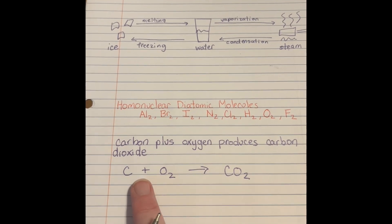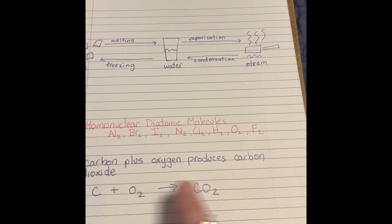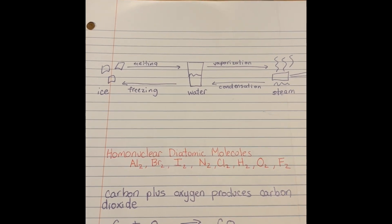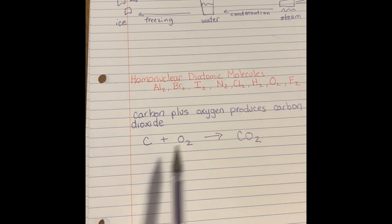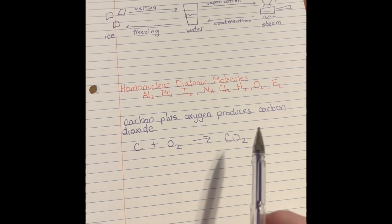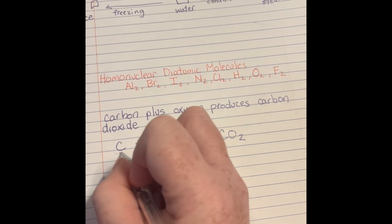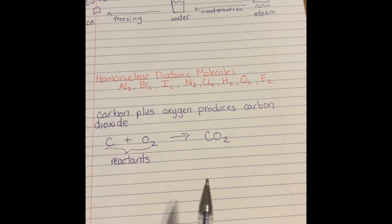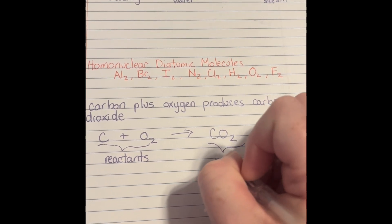You can also write this out as an equation: carbon plus oxygen produces carbon dioxide. The plus becomes the plus sign, produces becomes the arrow sign, and you know what carbon dioxide is. This forms the basis for much of what is done in chemistry regarding chemical equations. The substances that exist before the reaction happens are your reactants, and the materials that are produced after the reaction happens are your products.